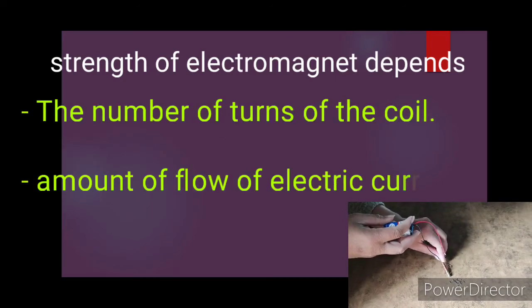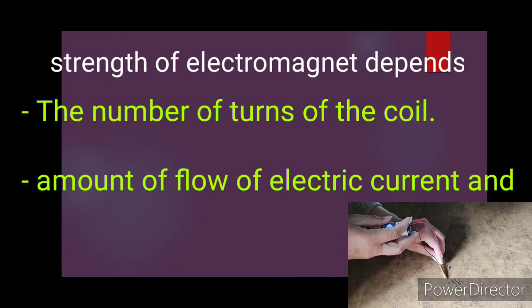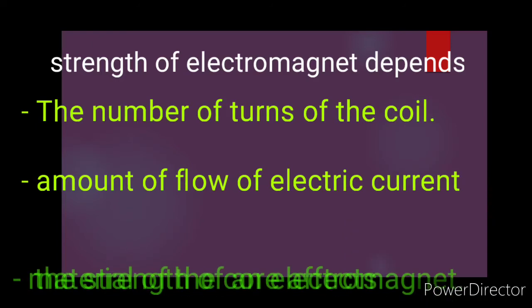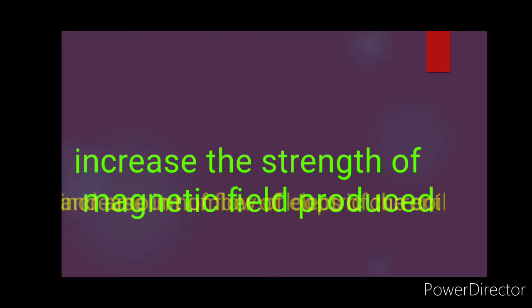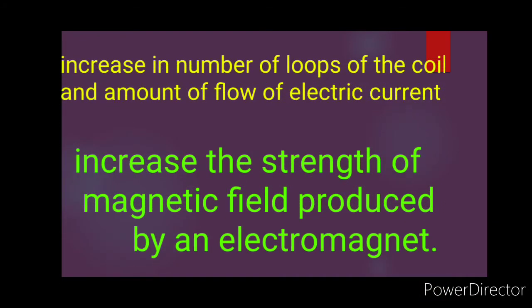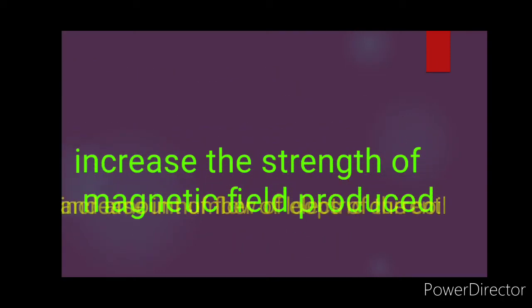The amount of electric current flow and the material of the core affect the strength of the electromagnet. Increasing the number of loops of the coil and the amount of electric current increases the strength of the magnetic field produced by the electromagnet.